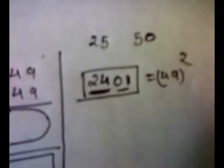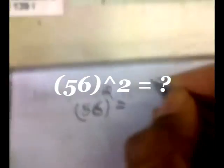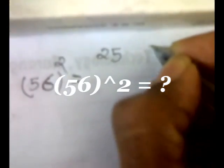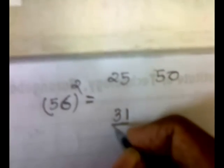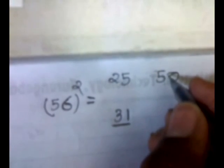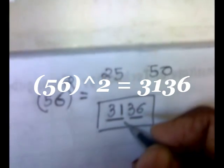See how easy and less time-consuming this method is! Let's take another example — the square of 56. We will take 25 and 50 as a base. The first step: the difference between 56 and 25 is 31, so we get our first two digits. The difference between 56 and 50 is 6, and the square of 6 is 36. So our answer is 3136. This is the square of 56.